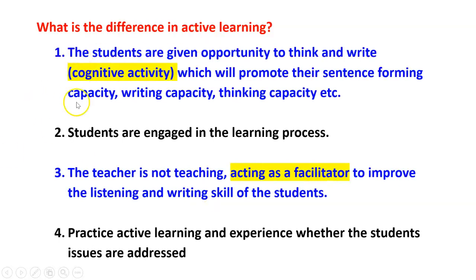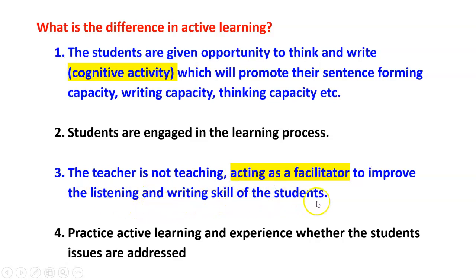What difference do we observe here? The students are given the opportunity to think and write — it is a cognitive activity. We have to give them the opportunity to think about the subject, which will promote their sentence-forming capacity, writing capacity, and thinking capacity. Students are engaged in the learning process and are also part of it. The teachers are not just teaching; they are acting as a facilitator to improve the listening and writing skills of the students. Practice active learning in the classroom and experience whether students' issues are addressed — their communication will improve, their confidence will improve, and writing skills will improve in the classroom.